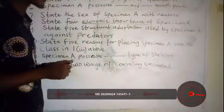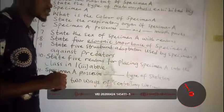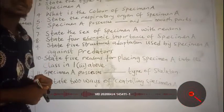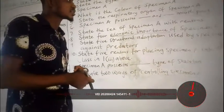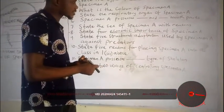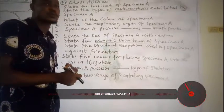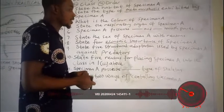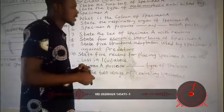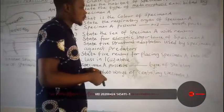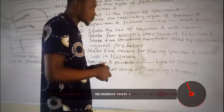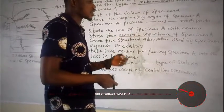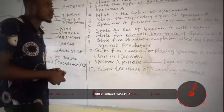First, it acts as a vector for the transmission of diseases like leprosy. Second, it constitutes a nuisance and irritation at home. Third, it may serve as a source of food for some animals like domestic fowl and other birds. Fourth, it destroys and contaminates food. Fifth, it destroys materials like clothing and books.